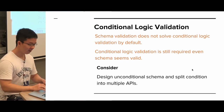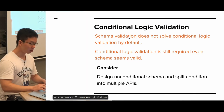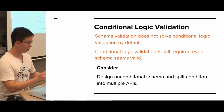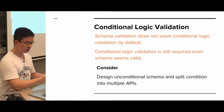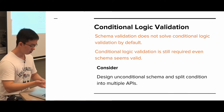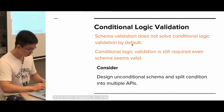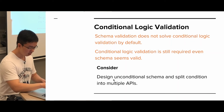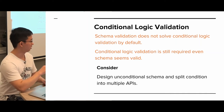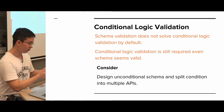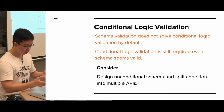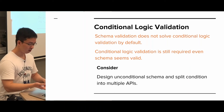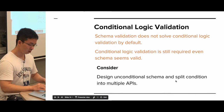Even with validation, we have other validation rules like conditional logic. For example, if the user is an admin, you have to include certain properties. If the user has been suspended, you must include something else. But JSON schema cannot help you with that. The only thing you can do is consider splitting your design - split unconditional schemas into multiple APIs. For admin, you have one schema, and for other types of users, you have other APIs. This is just a suggestion; I don't think it applies to all APIs.